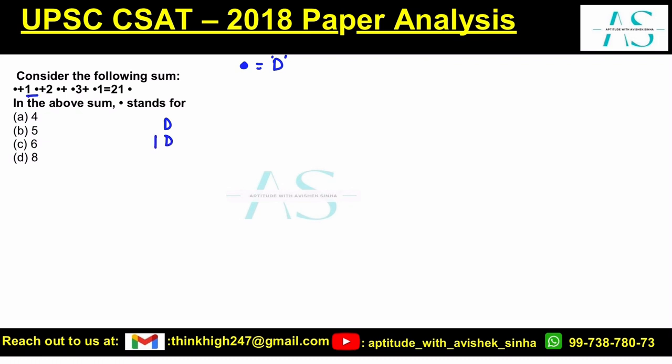Plus two dot, that means 2D, plus dot three means D3, plus dot one means D1. Now when you add all of these five numbers you get the resultant as 21D.